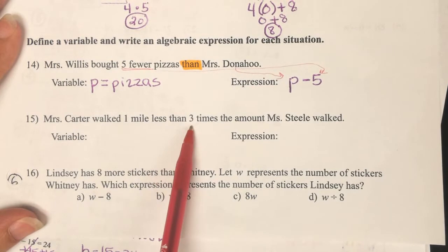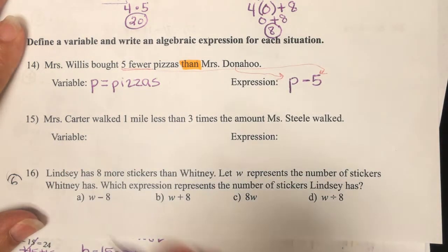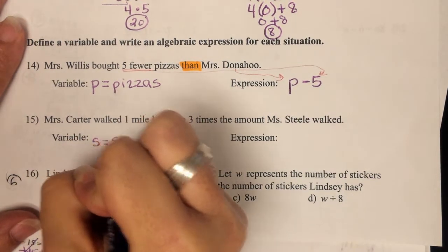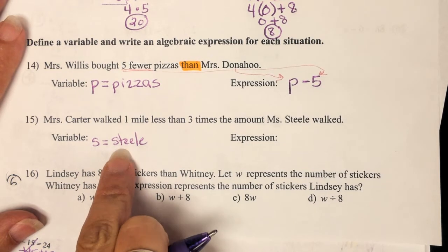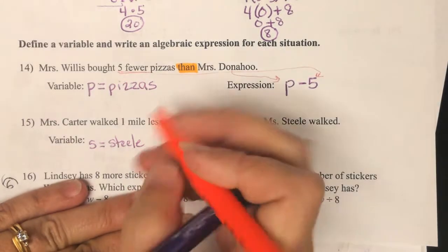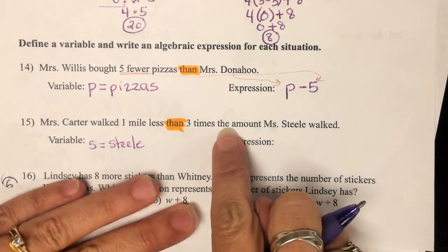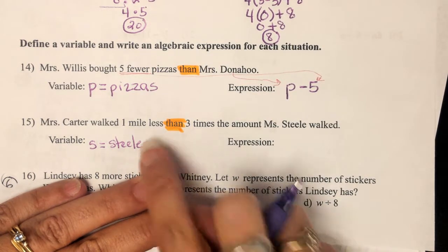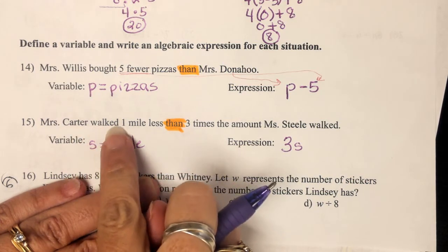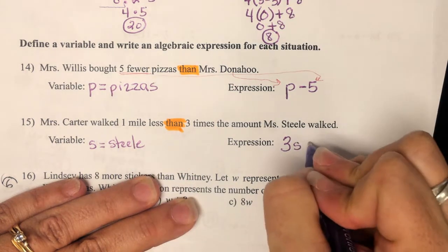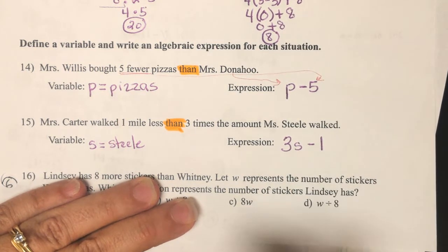Ms. Carter walked 1 mile less than 3 times the amount Ms. Steele walked. So my variable, I would make it, I don't know, S for Steele. You could make it how far Steele walked. As long as you have a letter equals a word, you're good to go. Now start now. We see the word than this time, our magic word. We kind of start out with this end writing it, because we want it in the front. 3 times the amount Ms. Steele walked. That means 3S, 3 times it. Now on the back end of it, Ms. Carter walked 1 mile less than that. So 1 mile less than that would be minus 1. So you have to start with a number before you can ever take away 1.